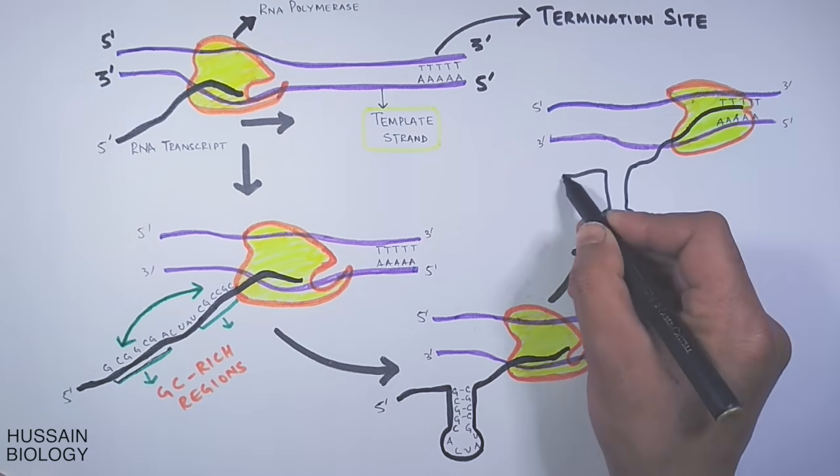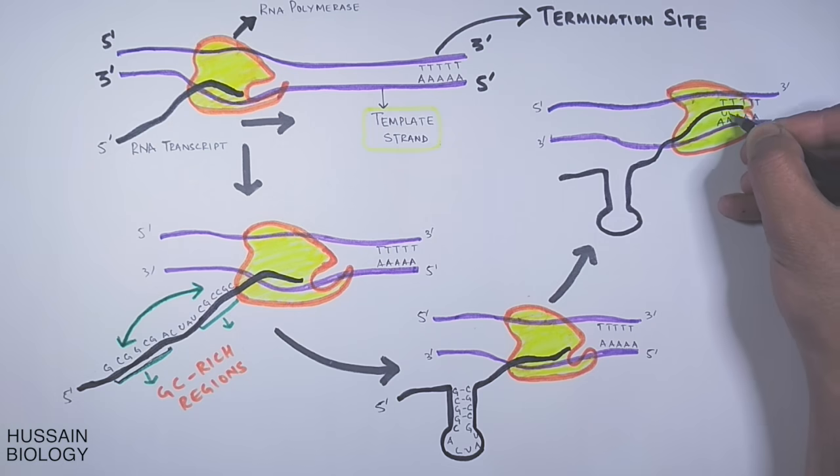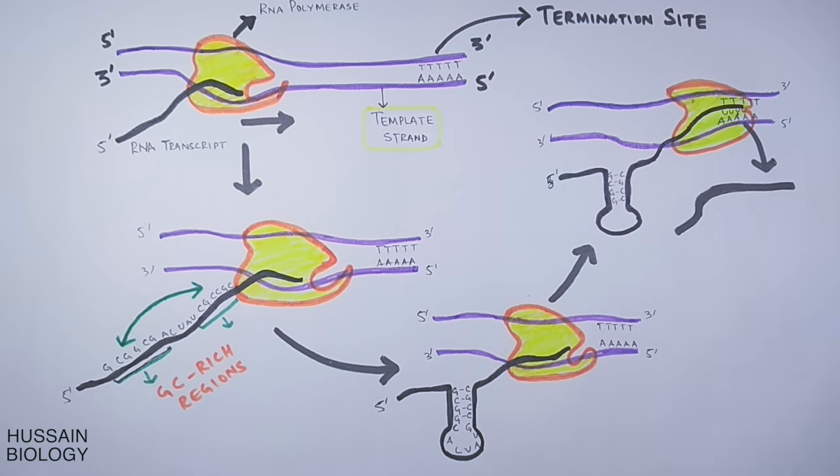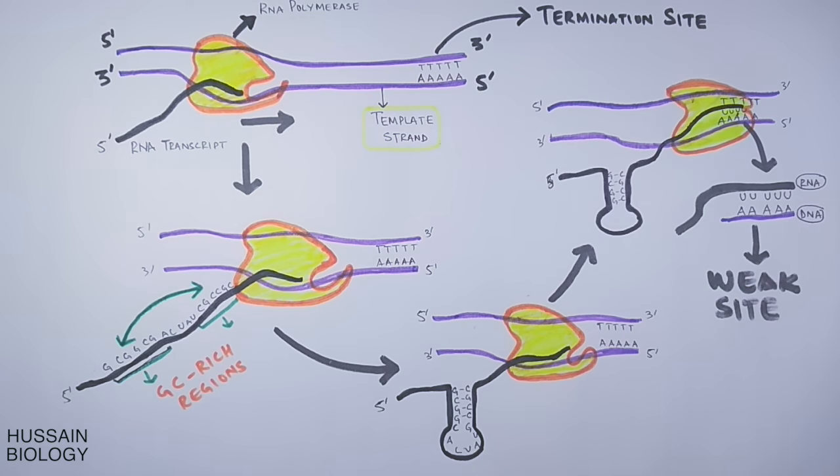The template strand having polyadenine transcribes polyuracil in the RNA chain. So this region—AU base pairs—is the weak point from where the transcription is terminated easily when the hairpin loop-like structure forms.